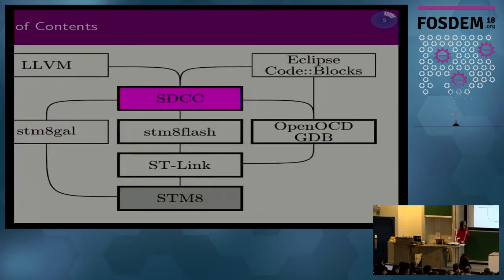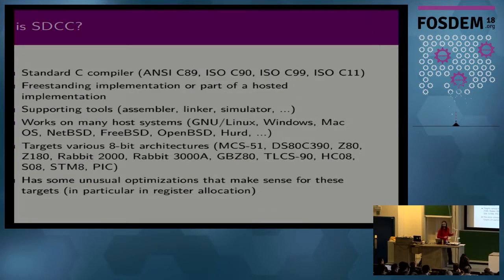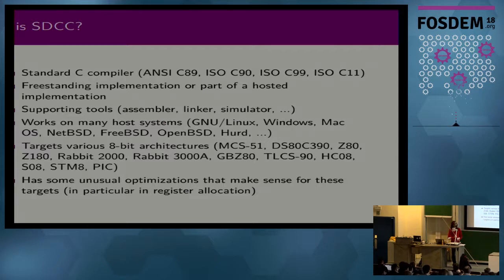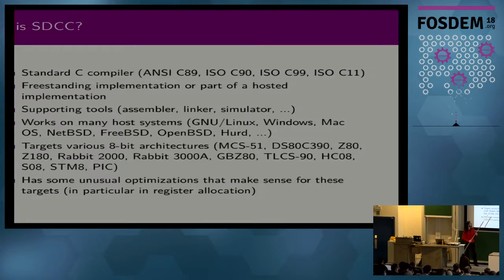The most important part of the toolchain is the compiler targeting the STM8. SDCC, the small device C compiler, has a lot of support even for current C standards — not quite at the level of GCC or LLVM, but typically better than non-free compilers for such small microcontrollers. We usually use it for freestanding implementation, but it could also be part of a hosted implementation. It targets a lot of other CPU architectures as well, like the aforementioned 8051, the classic Z80, and certain variants thereof. It has some unique optimizations very suitable for these small architectures that you won't find in GCC or LLVM.